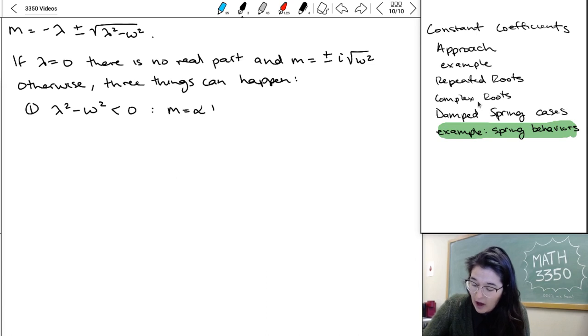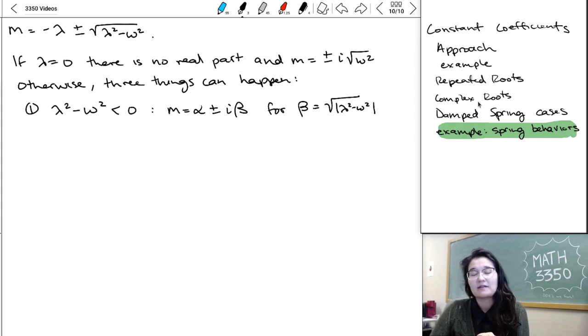So an imaginary number comes out of that square root. And m is going to be alpha plus or minus i beta for alpha equal to negative lambda and beta equal to the square root of the absolute value of lambda squared minus omega squared. Or you can think about that the square root of omega squared minus lambda squared. The i is taking care of the fact that this is imaginary and we just need to calculate that value that it's going to take on.